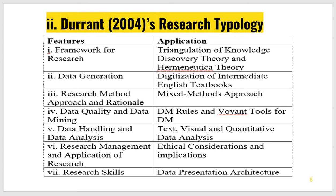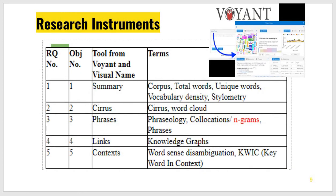So it is your choice whether you choose the research onion or Durrant's seven-pointed typology — you can read further from the internet. When you start research, there are different instruments. For example, I have used the Voyant text mining tool. You can make a table where your research questions, research objectives, and tools or instruments are listed — they should correlate with each other.